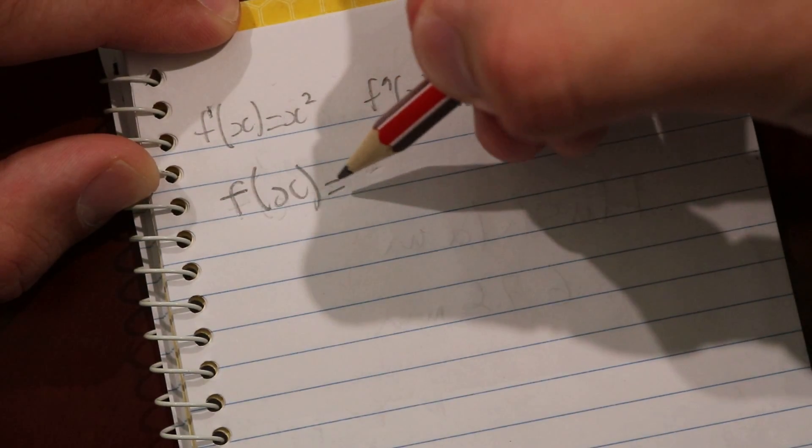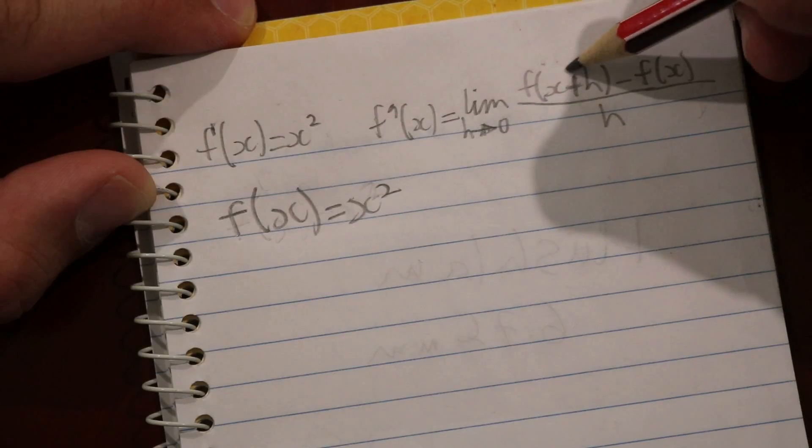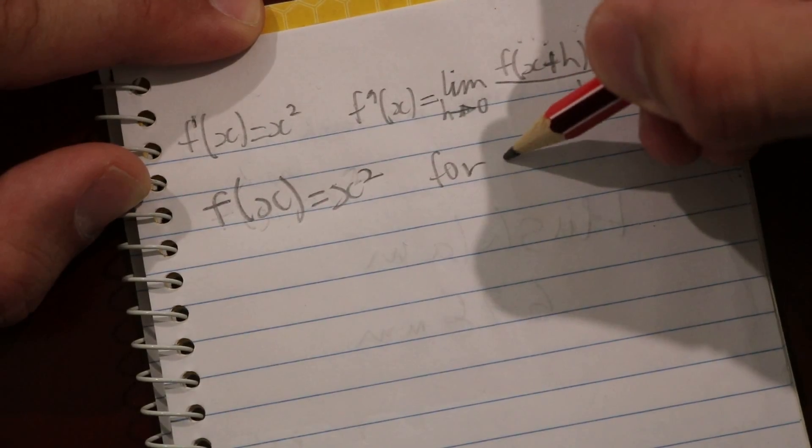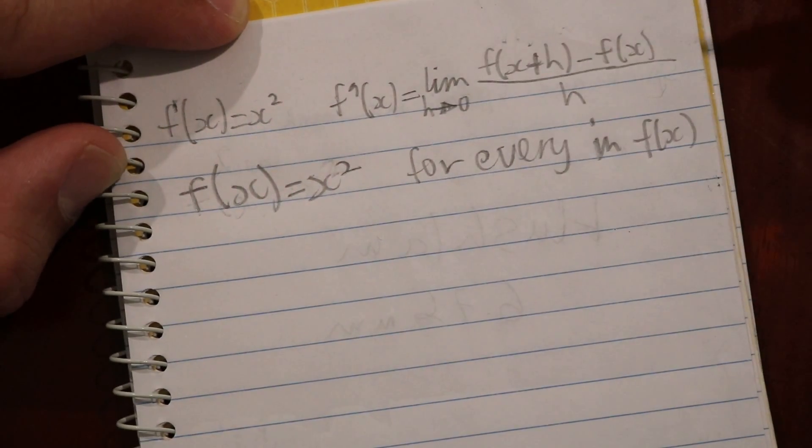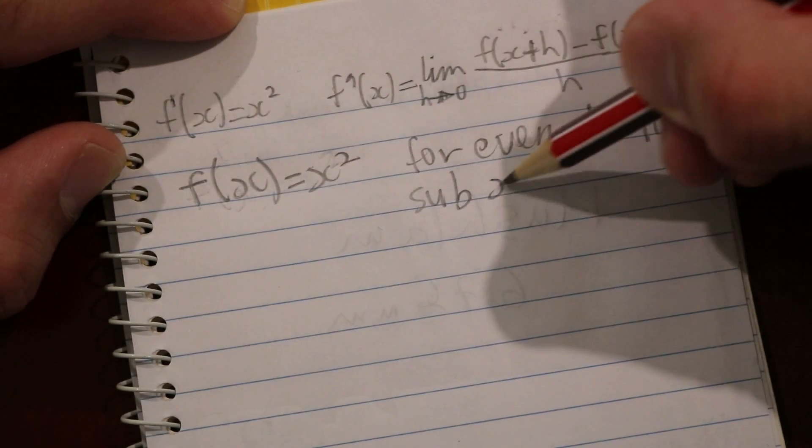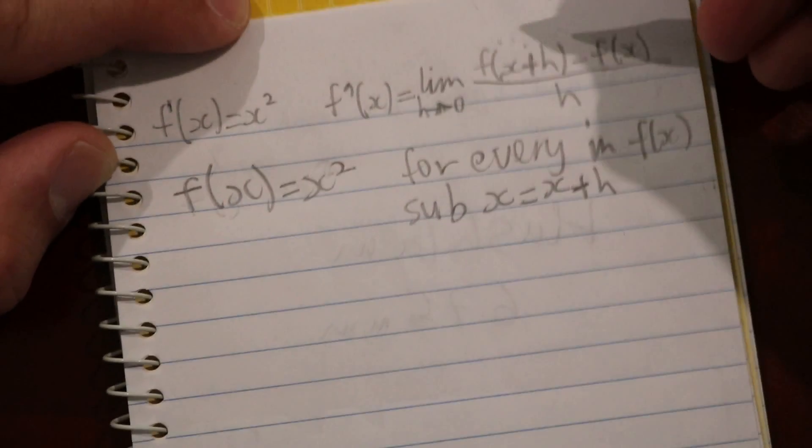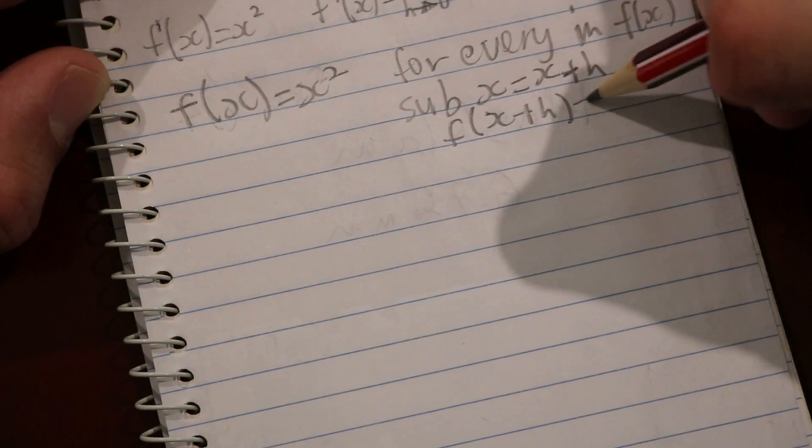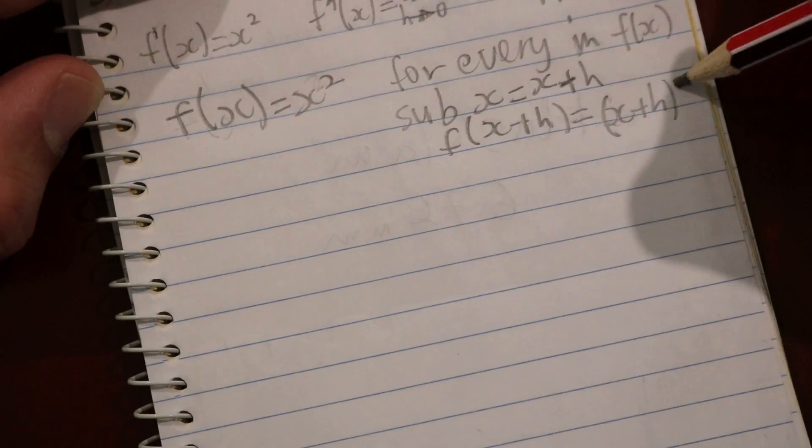So we know that f(x) = x². The second term here, f(x+h), is essentially saying that for every x in f(x), substitute x with x+h. So in this case, f(x+h) will be (x+h)². And that's what you have to do.